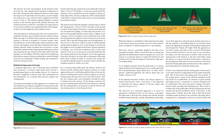The aiming point is the point on the ground at which, if the airplane maintains a constant glide path and was not flared for landing, it would strike the ground. To a pilot moving straight ahead toward an object, it appears to be stationary — it does not appear to move under the nose or forward away from the aircraft. Objects in front of and beyond the aiming point do appear to move as the distance is closed, and they appear to move in opposite directions. During instruction in landings, one of the most important skills a pilot must acquire is how to use visual cues to accurately determine the true aiming point from any distance out on final approach, enabling the pilot to predict the touchdown point to within a few feet.